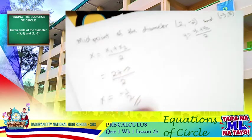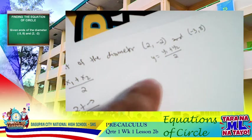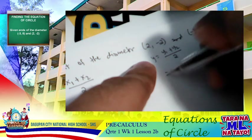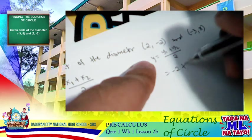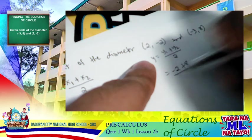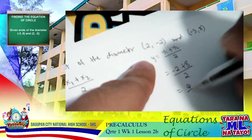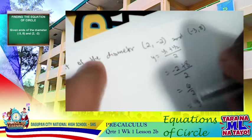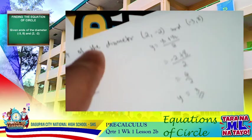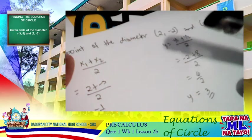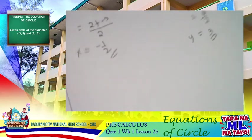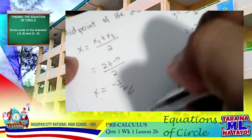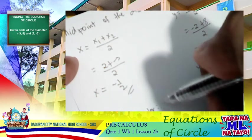Afterwards, we solve for the value of y for the coordinates of the midpoint. It's simply negative 2 plus 8, all over 2, which is 6 over 2, or simply 3. This is now our value of y, which is 3.